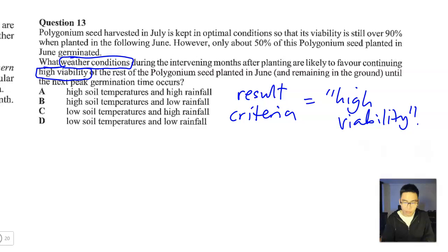Have another read of this and you'll realise that the rest of the information is not as important. So the high viability is the thing that we're interested in. Yes, it's about the Polygonum seed, but it's the quality of the Polygonum seed that we are interested in. We're not really interested in germination. The rest of it is just context again. So high viability of the seeds until they germinate next. But really we're just interested in high viability. So in simple terms, we're trying to figure out is high or low soil temperatures and high or low rainfall going to lead to high viability.